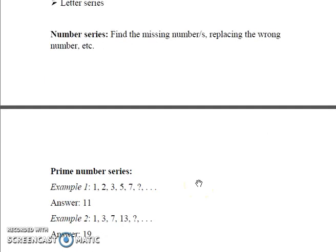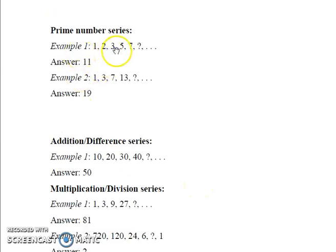For example, consider this sequence: 1, 2, 3, 5, 7 and so on. It is a sequence of prime numbers. So automatically, we know that the next term after 7 is 11, which is our answer here.